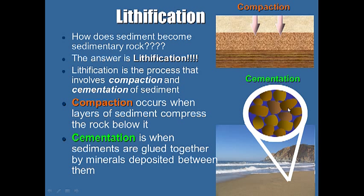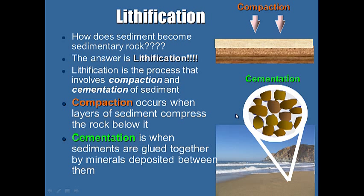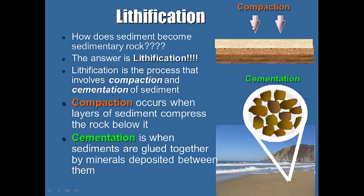Then we get cementation. Cementation is when sediments are glued together by minerals deposited between them. Over time, water passes through sand grains, and as it passes through, the water leaves behind minerals that glue the sand together. Those minerals get deposited as water passes through the sand grains, gluing them together. So we get compaction — the smushing of layers — and cementation, where sediments are glued together by minerals deposited between the grains.